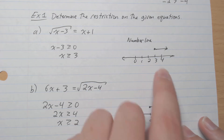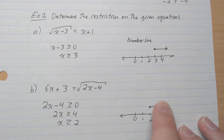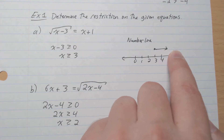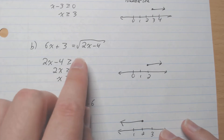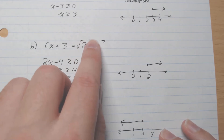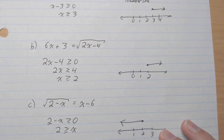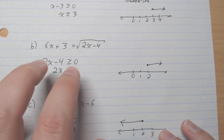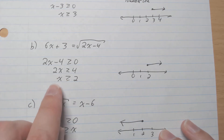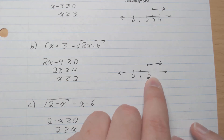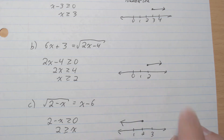On a number line, you're allowed to be equal to 3, so there's a solid dot, and it's greater or equal to 3. For part b, the restriction is 2x minus 4 must be greater or equal to 0. Adding 4 to both sides and dividing by 2, x is greater or equal to 2. The number line looks like that.